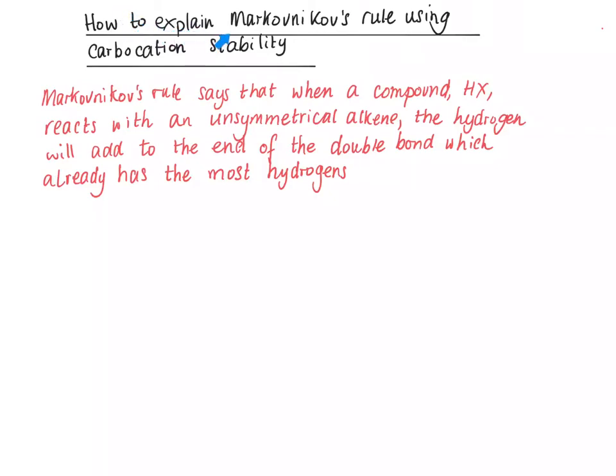How to explain Markovnikov's rule using carbocation stability. Markovnikov's rule says that when a compound HX, such as HBr, HI, or HCl, reacts with an unsymmetrical alkene, the hydrogen will add to the end of the double bond which already has the most hydrogens.